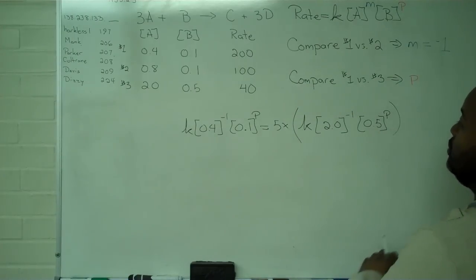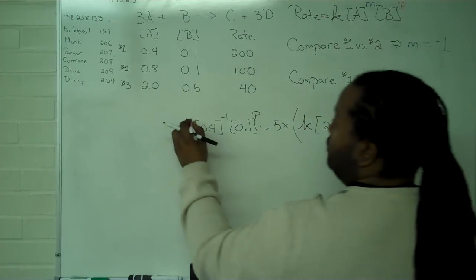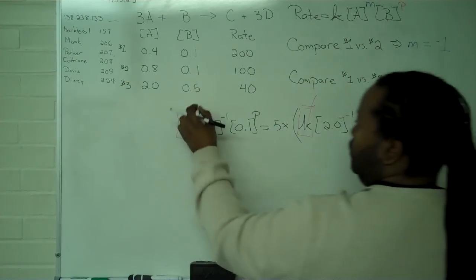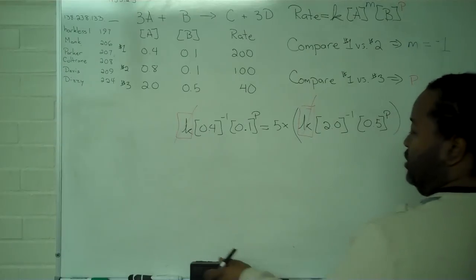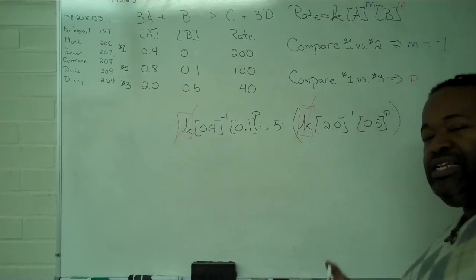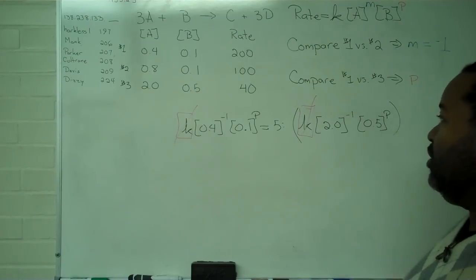Now for the cancellation, we will be able to get rid of K, our rate constant, on both sides. But now, we've got a much bigger problem in that we don't have the clean cancellations we've seen before.